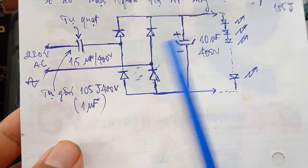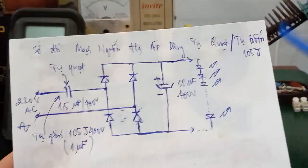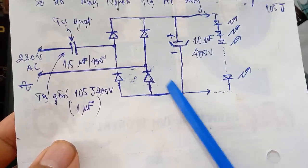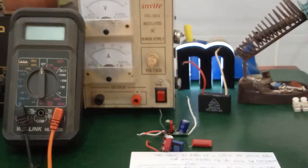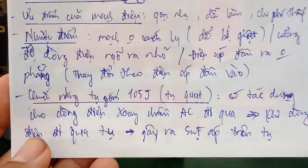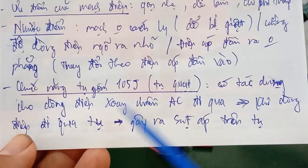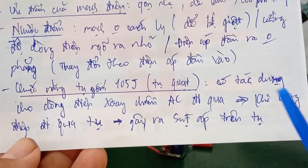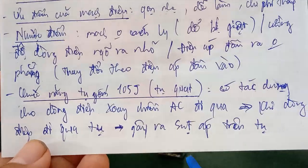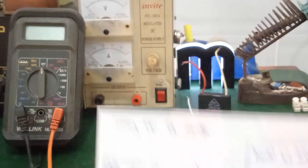Mạch được thiết kế khá đơn giản, chỉ có 3 linh kiện chính: tụ gốm hoặc tụ quạt, cầu diode, và tụ hóa. Chức năng của tụ gốm 105G (1 microfarad) hoặc tụ quạt là cho dòng điện xoay chiều AC đi qua, và khi dòng điện đi qua tụ sẽ gây ra sụt áp trên tụ, từ đó làm giảm điện áp ngõ ra.